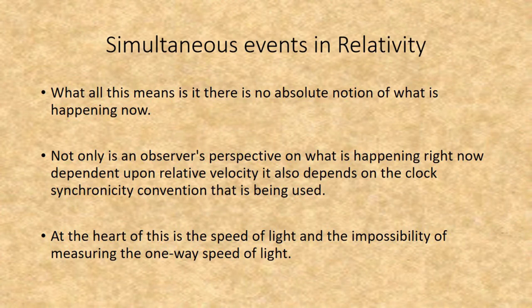What this means is that there is no absolute notion of what is happening now. Not only is an observer's perspective on what is happening right now dependent upon relative velocity, it also depends on the clock synchronicity convention being used. At the heart of this is the speed of light and the impossibility of measuring the one-way speed of light.